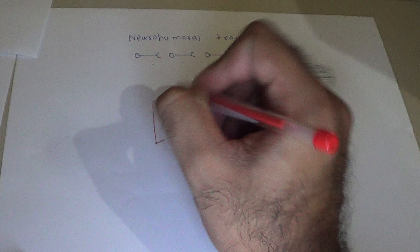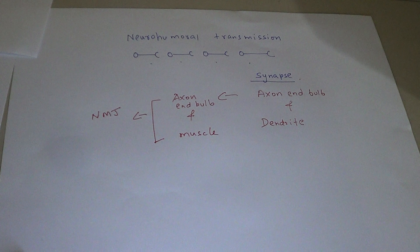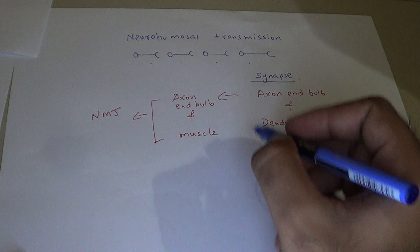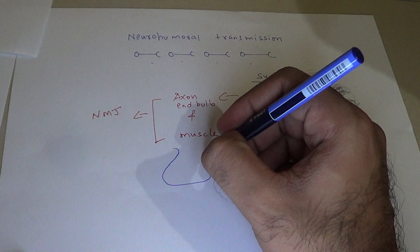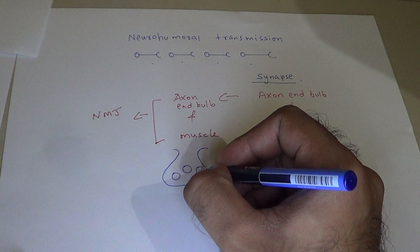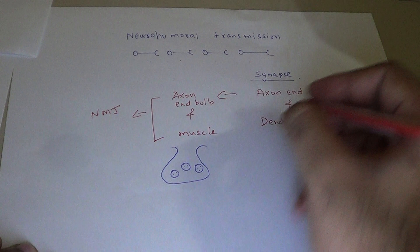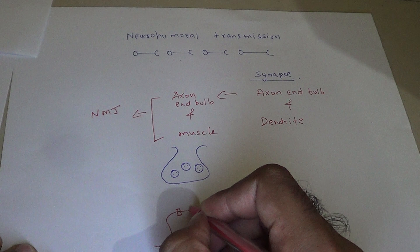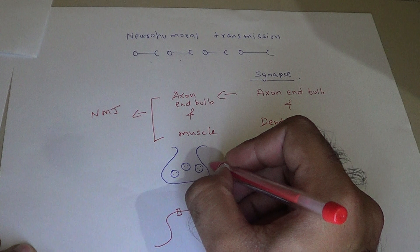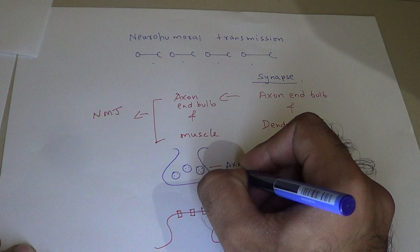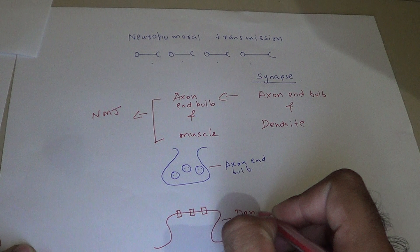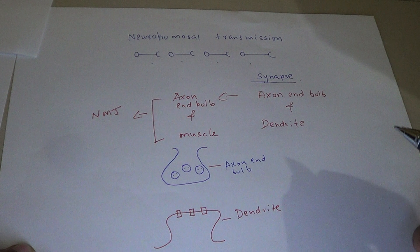But if the gap is between the axon end bulb and a muscle cell, we call that gap a neuromuscular junction. Now let us see a basic structure of how synapses are arranged. In the axon end bulb we have vesicles, and in these vesicles neurotransmitters are stored. The other neuron — the dendrite — is on the other side and has receptors that will bind to the released neurotransmitters.